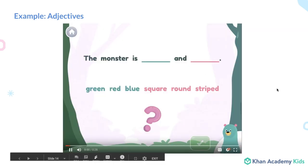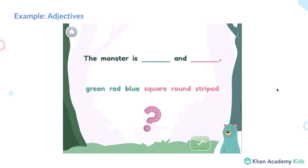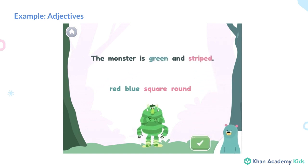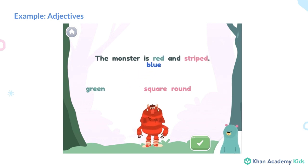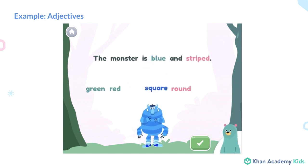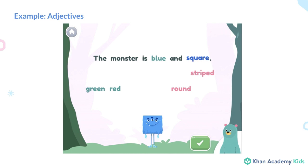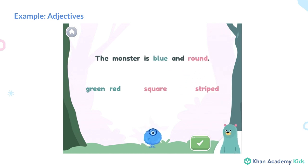Make a monster. Put a green adjective on the green line. Put a pink adjective on the pink line. Green, striped, red, noodle, blue, square, round. Awesome! The monster is blue and round.